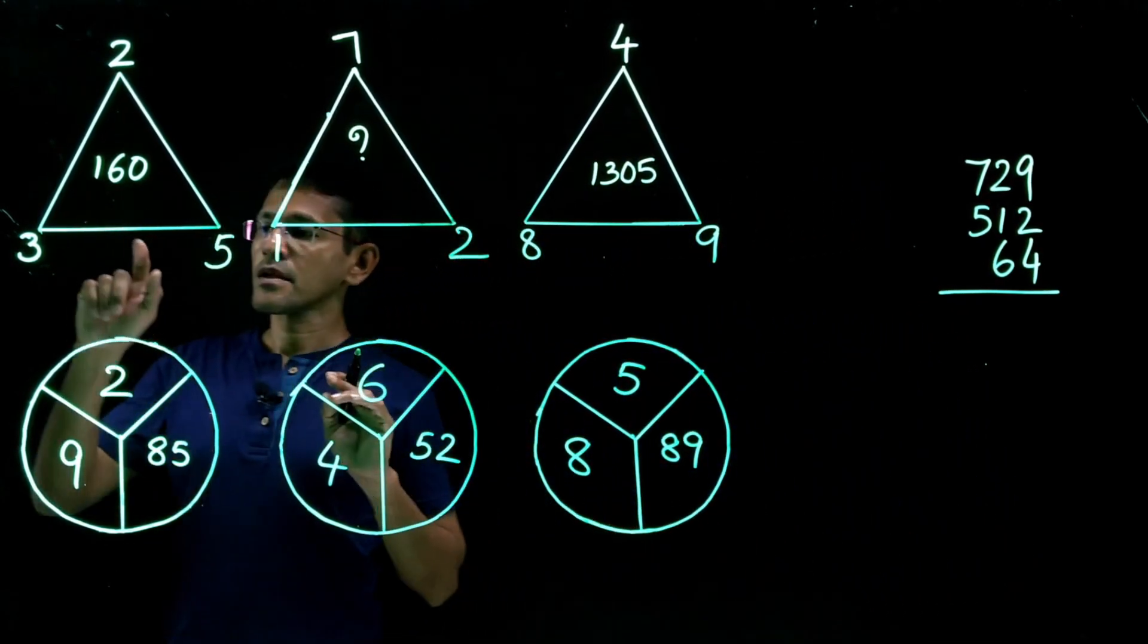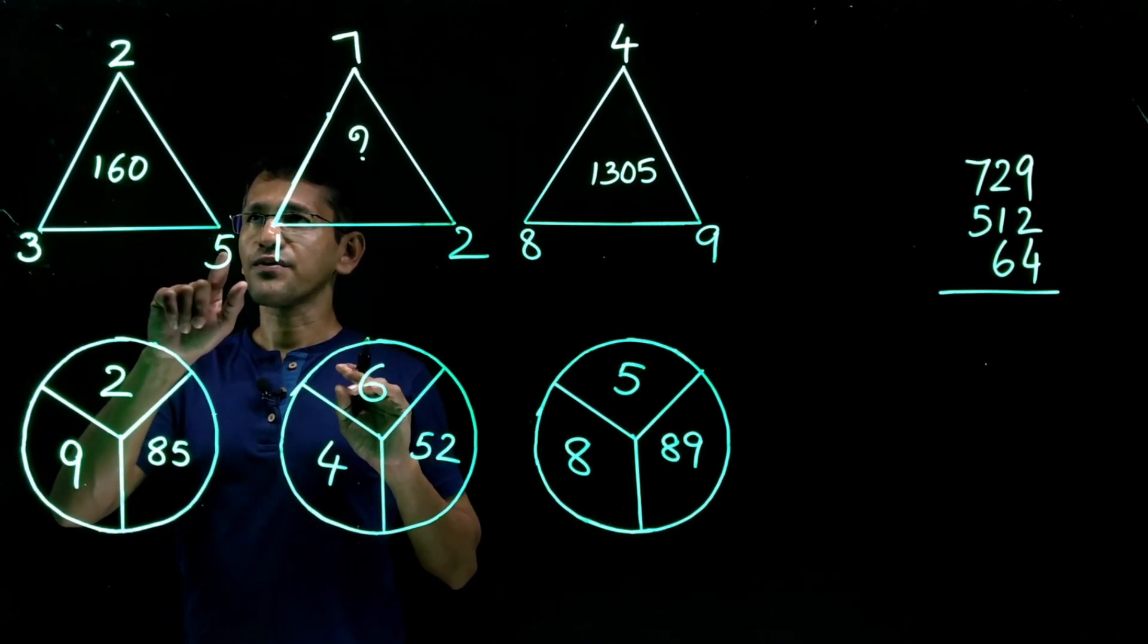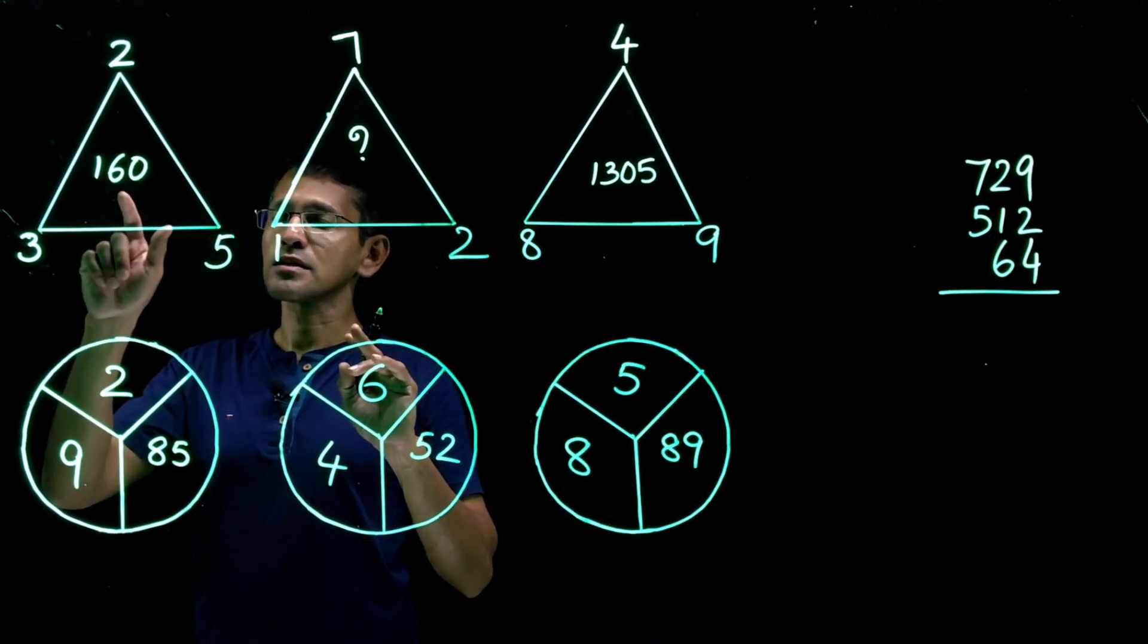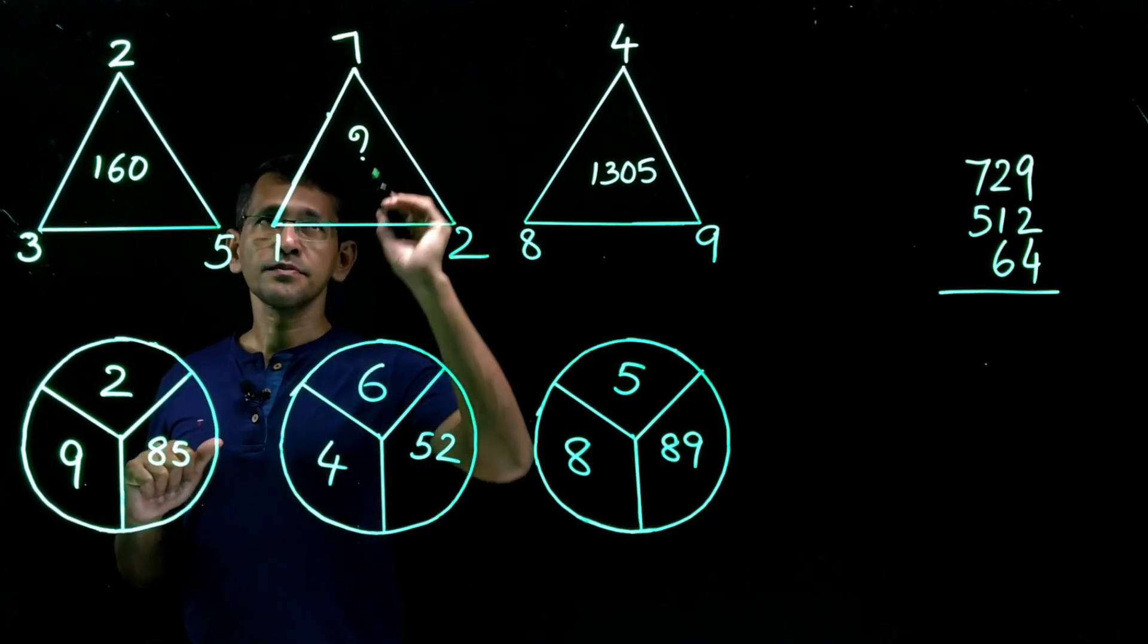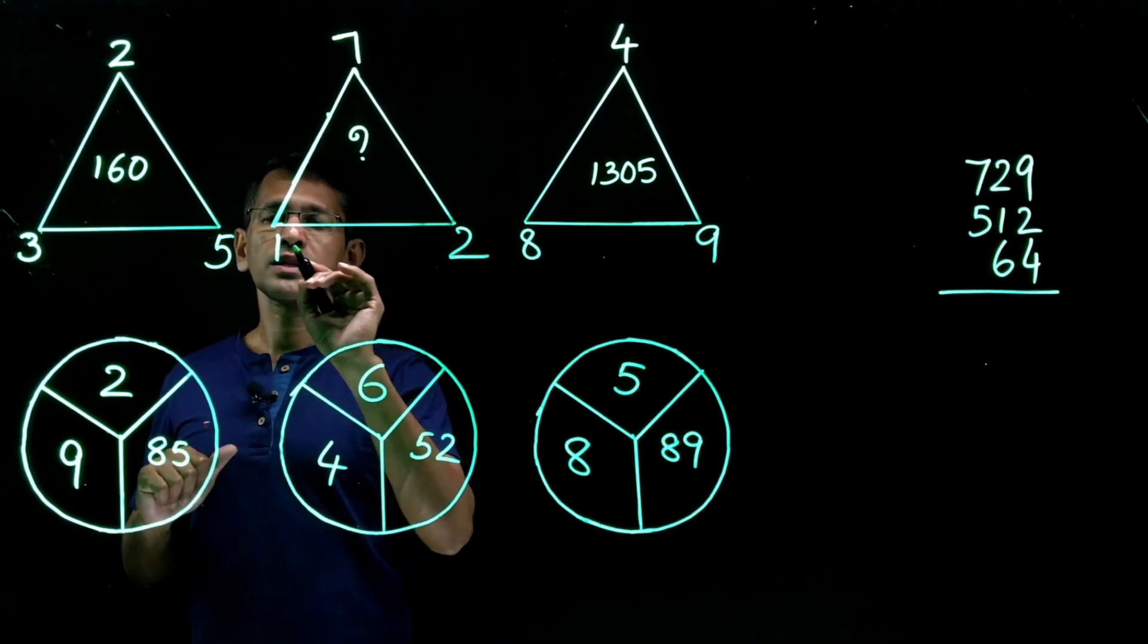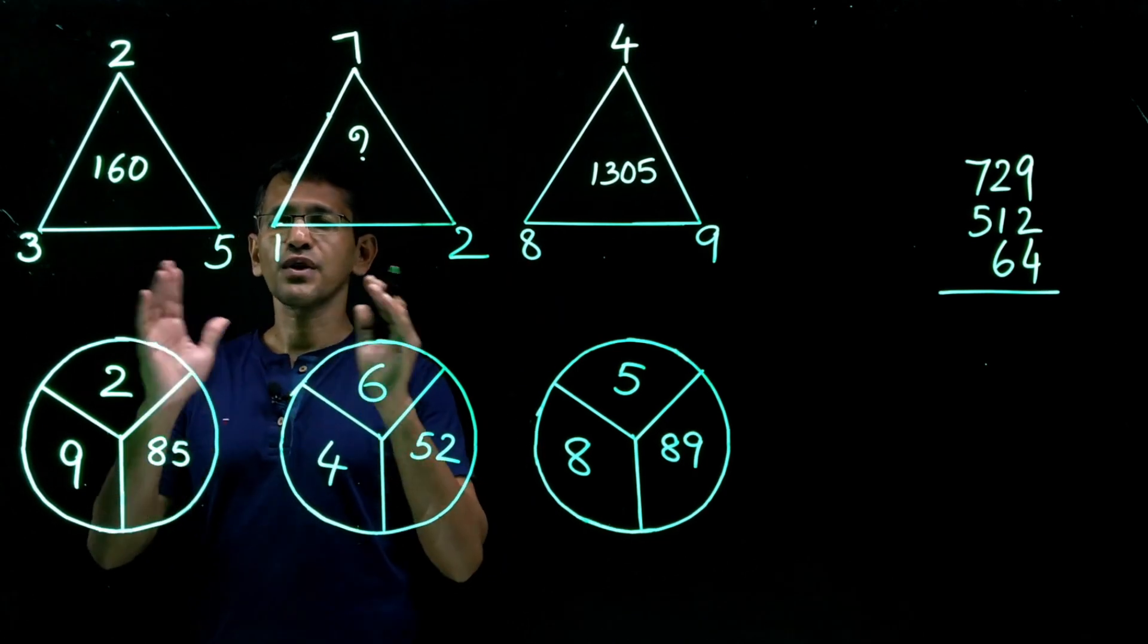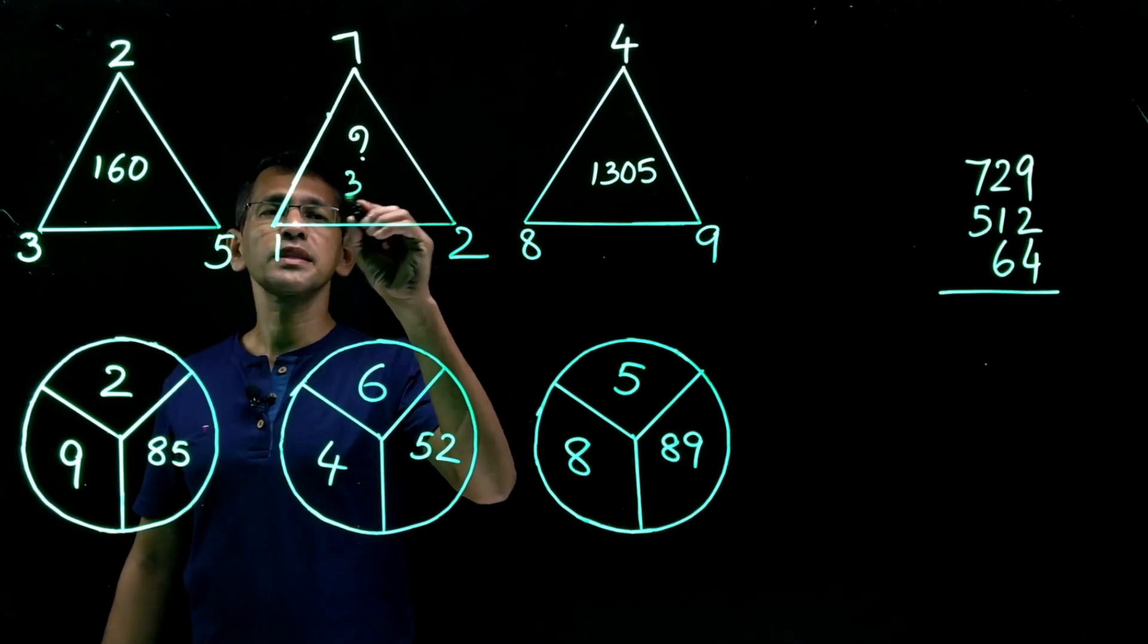What is it? 8 cube plus 9 cube plus 4 cube would be the answer here. Let's check it out here as well. What is it? 3 cube? 27. 5 cube? 125. So 125 plus 27 is 152. Plus 2 cube? 8. 152 plus 8 is 160. Perfectly alright. Now what would be the answer here? 7 cube? 343. And this is 1 cube? 1. 343 plus 1? 344. 344 plus 2 cube? 8. 344 plus 8? 352. That would be the answer in this case.